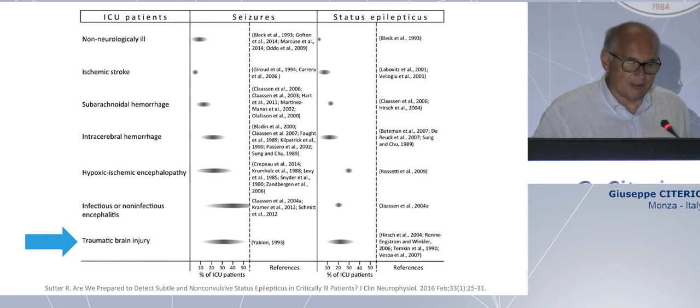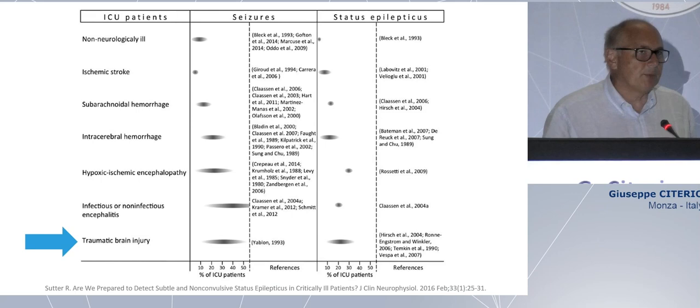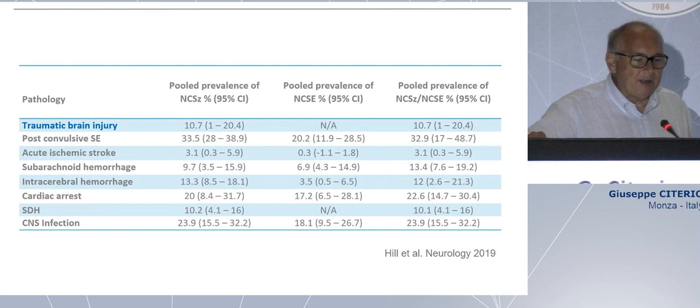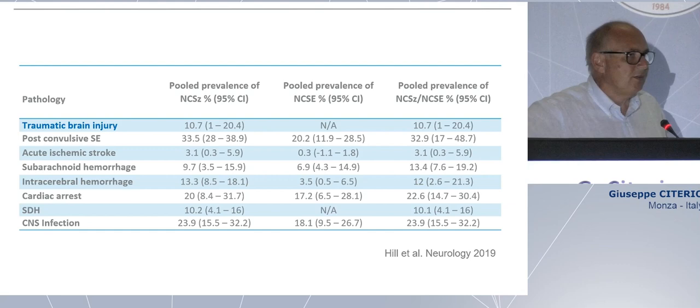Thinking about TBI, seizures are not uncommon. If you look at the literature, around 20-30% of the patients have some seizures. And if you think about status epilepticus, a lower number of patients have status epilepticus, but the problem is there. More than 15% of the patients could have a status. Another problem we face in some intensive care units is that some seizures are not convulsive. So the patient is not moving, you are not able to identify the seizure. So in this case, 10% of the patients with TBI, probably already in coma, have seizures and no sign of seizure.